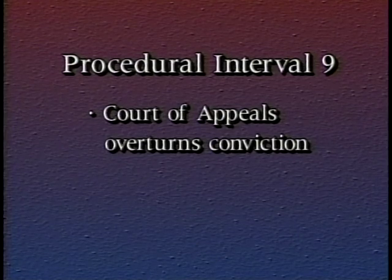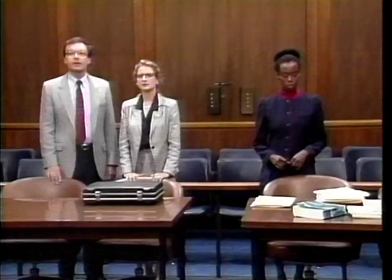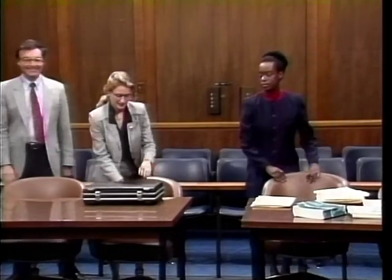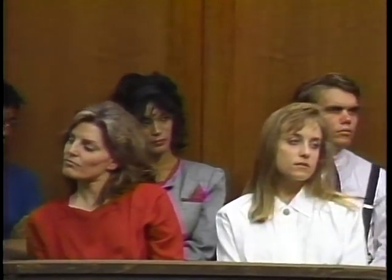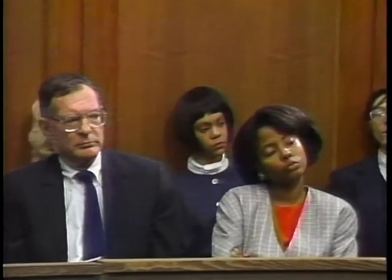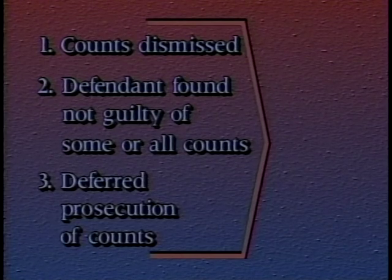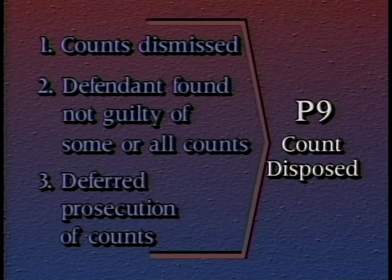One or more counts may move into P-9 when the court of appeals overturns a conviction and the district court enters a dismissal order. But there are other ways too: first, the counts may be dismissed with or without prejudice by the district court; second, the defendant may be found not guilty on some or all counts after trial; or third, the U.S. attorney may agree to defer prosecution — that is, agree to dismiss the counts if the defendant complies with certain conditions in a written agreement. In all these examples, some or all counts are disposed of or dismissed, so they move to P-9.